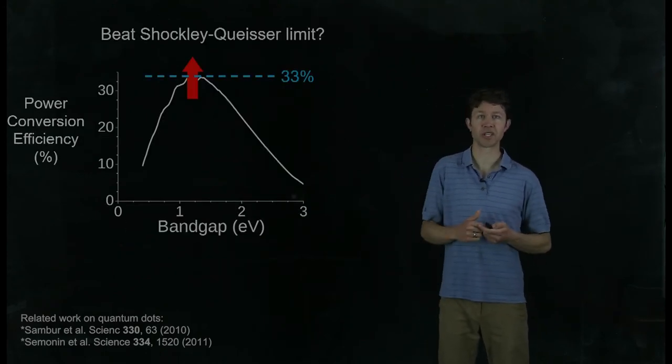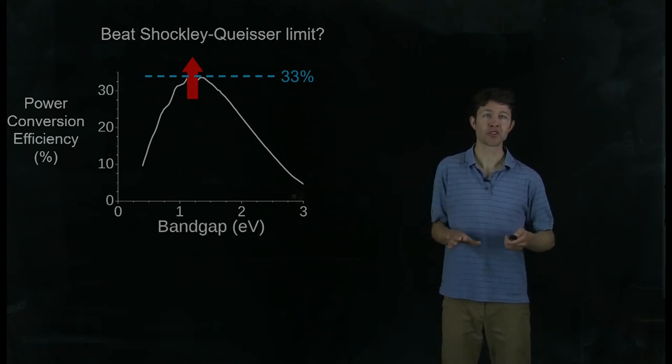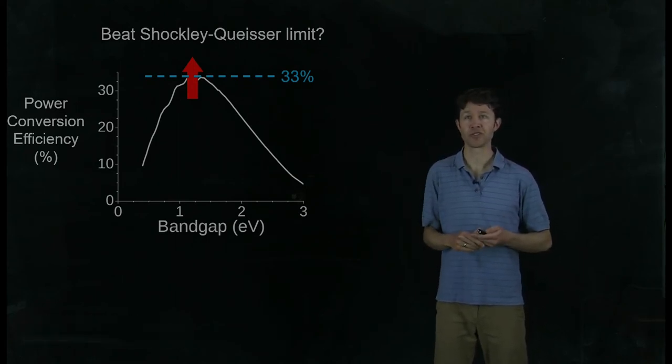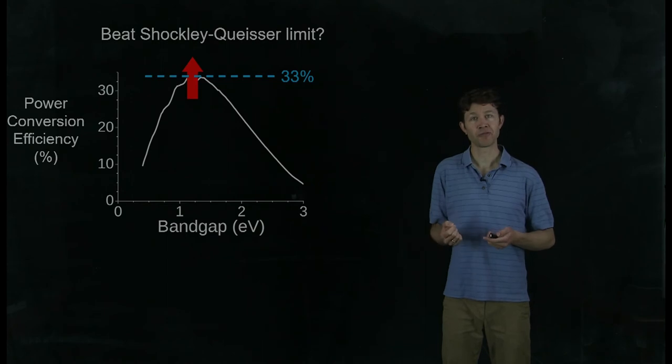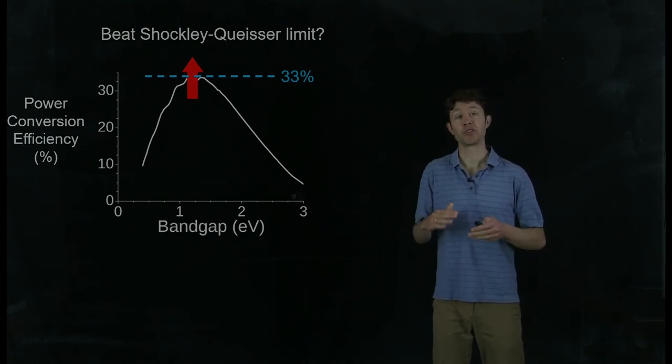So does this mean we beat the Shockley-Queisser limit? We haven't come close to having a high power conversion efficiency. However, we have broken one of the assumptions that was used to calculate this limit.